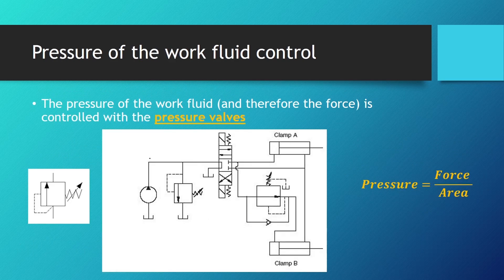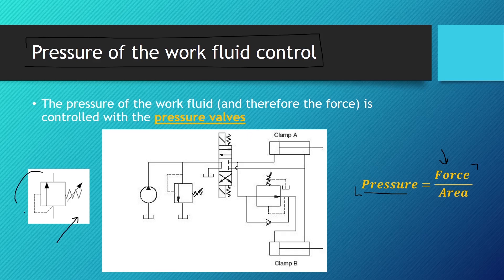What about the pressure of the work fluid? Pressure is equal to force divided by area, so by changing the pressure, we directly change the force. The pressure of the work fluid, and therefore the force, is controlled with pressure valves. Here we can see a pressure relief valve, which limits the pressure to a certain amount. When the system reaches that pressure, it opens up, releasing the excess fluid to the tank. In this pressure relief valve system, the force of the hydraulic cylinder extrusion is limited.